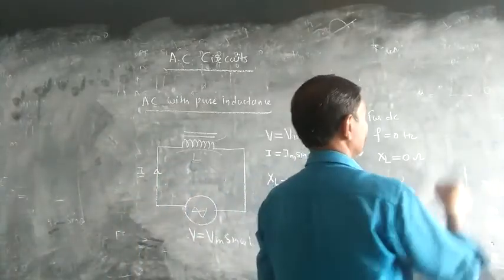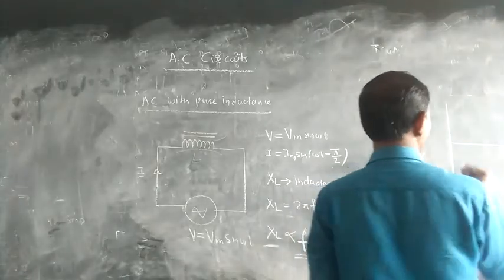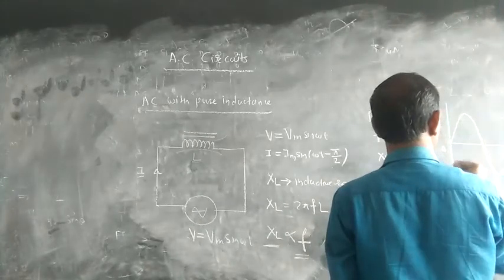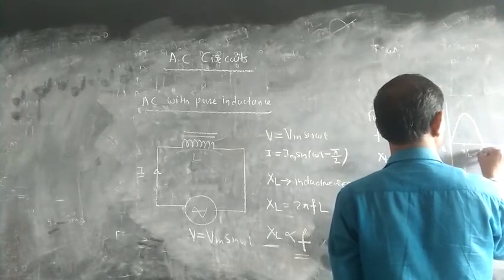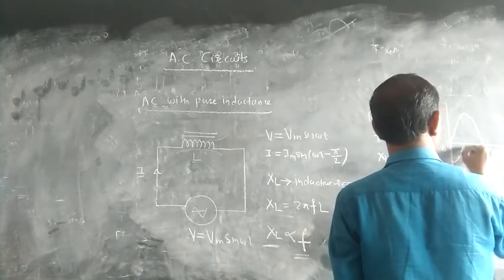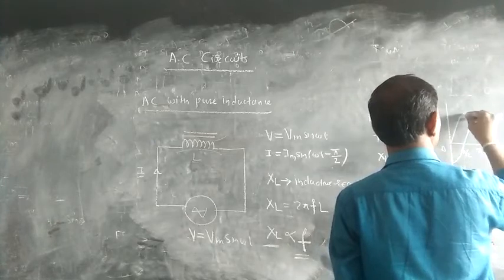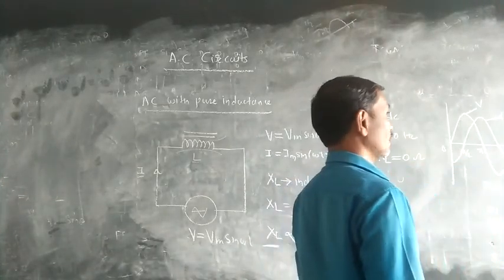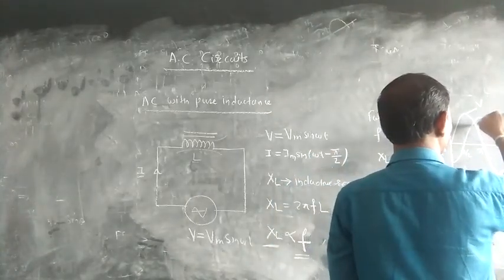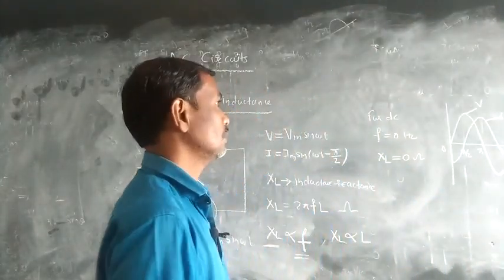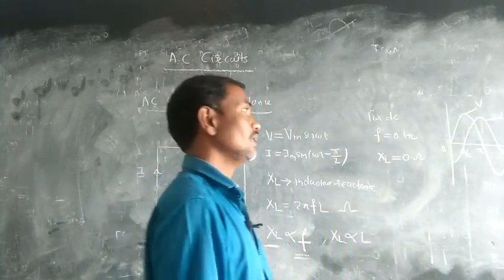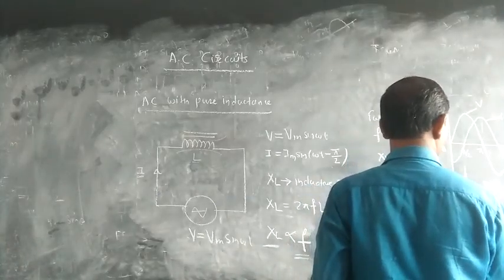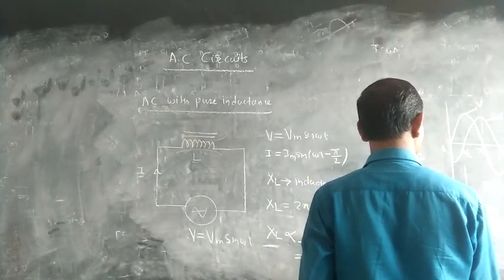Looking at the waveform: this is the voltage waveform from zero to two pi, and here is the current waveform. The current lags the voltage by 90 degrees. If we take the phasor diagram of these two quantities, the current phasor and the voltage phasor show that voltage leads by 90 degrees.